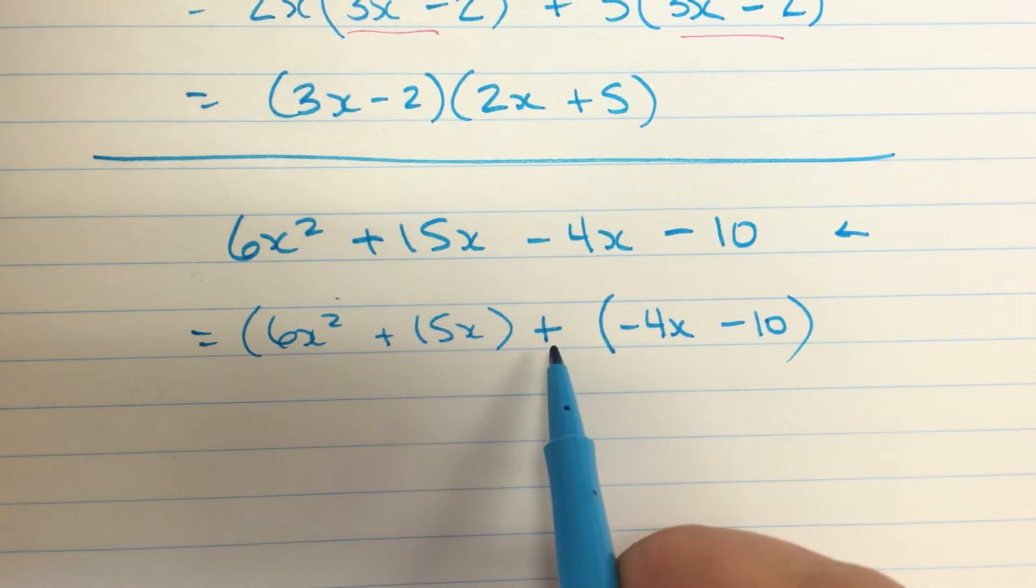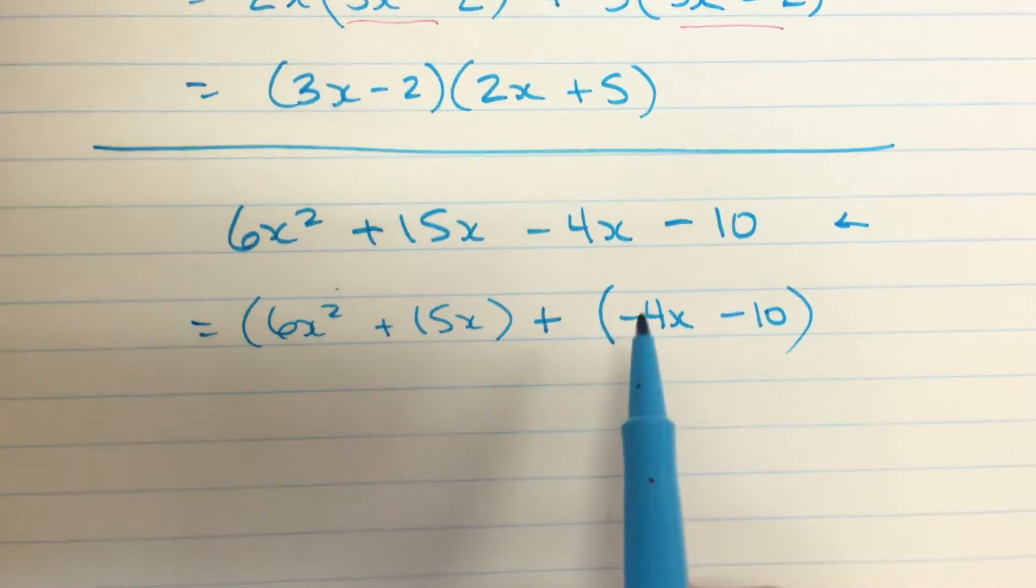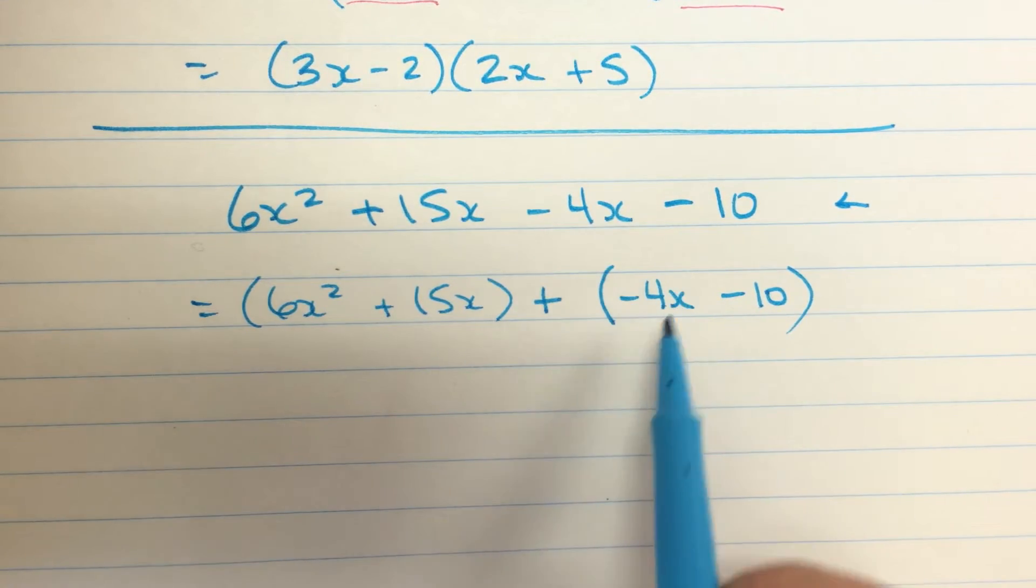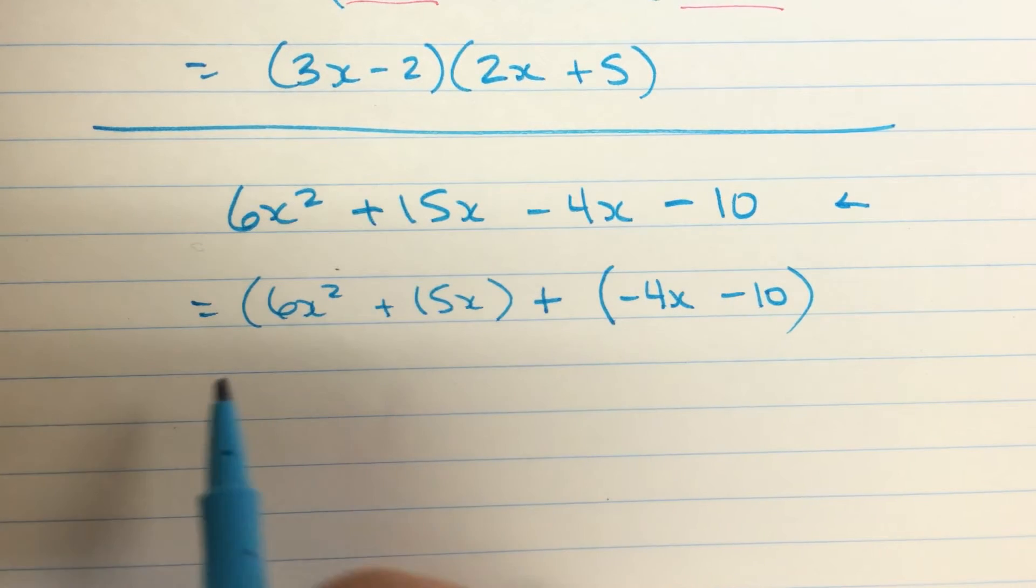If I had put a minus sign there, I would have had to change the sign on the 10. That's kind of messy. So I was really careful just to make sure that my minus sign stayed with my 4x and with my 10.